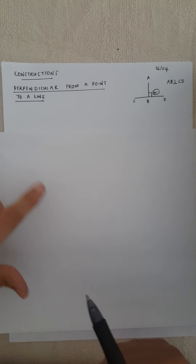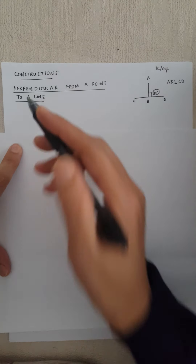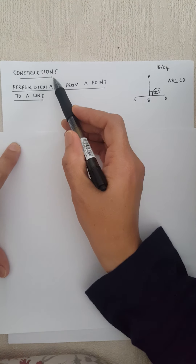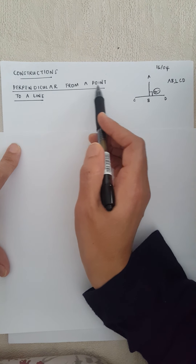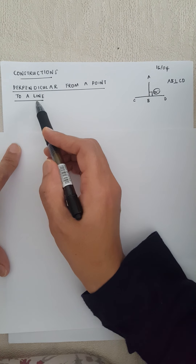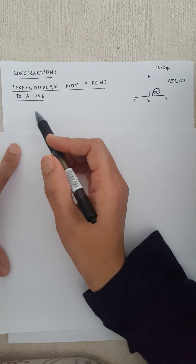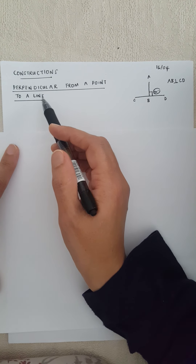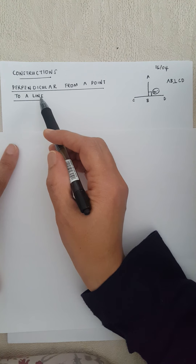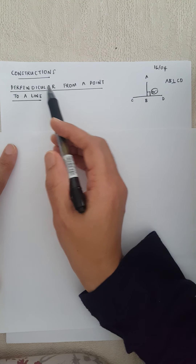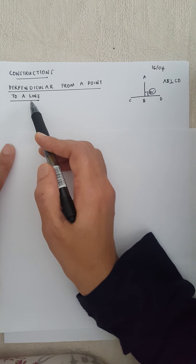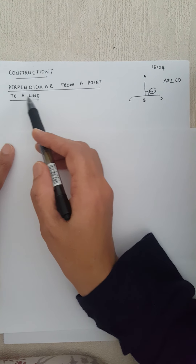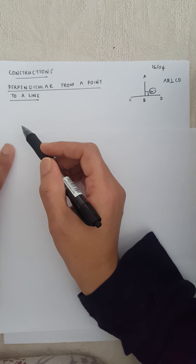As-salamu alaykum grade 8s. Today we're doing constructions again and we're drawing a perpendicular from a point to a line. I've told you that always when we need to do something in maths, first we need to read the English and understand what it is telling me to do.